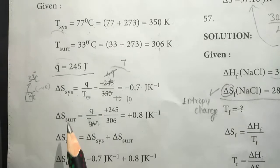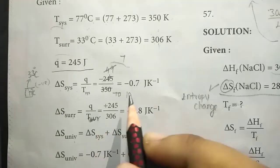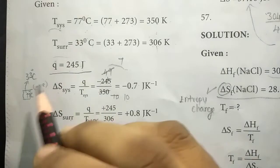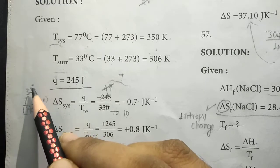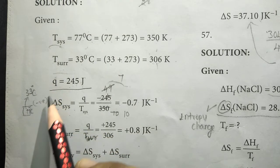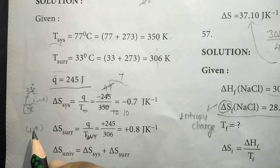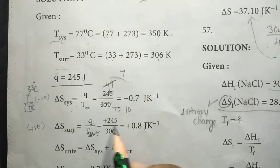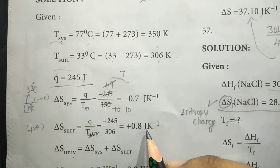Next is the surrounding. Entropy change of surrounding equals Q divided by temperature of the surrounding. Q is 245, and this is positive here because the surrounding absorbs the heat — it is endothermic and the heat absorbed is positive. So plus 245 divided by 306 equals 0.8 J per Kelvin.